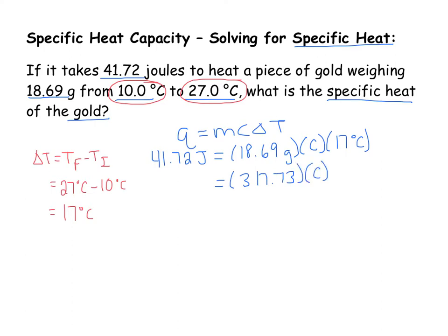C is our variable that we're solving for. We'll rewrite our heat here, and then divide both sides by 317.73. Those two will cancel. So 41.72 divided by 317.73 will give us our specific heat.